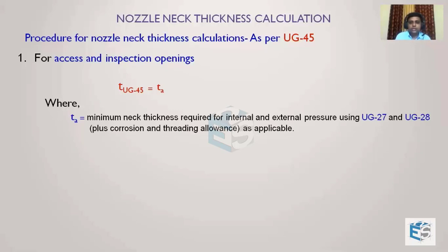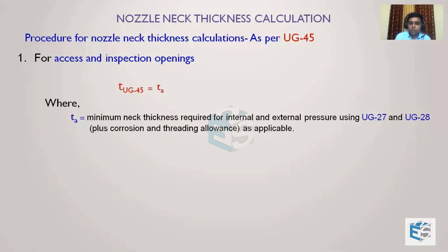To T_A we add the corrosion allowance. For example, for a pressure of 10 bar, using the formula PR/(SE − 0.6P), let's say the calculated thickness is 2.5 mm. Adding a corrosion allowance of 1.4 mm gives 4 mm. So 4 mm is T_UG45 for inspection openings — only the pressure-required thickness plus corrosion allowance. That is the end of the procedure for manways or inspection openings, which is very simple.